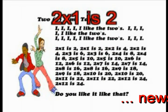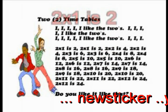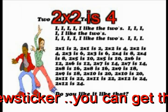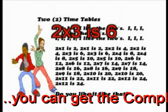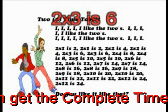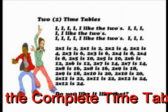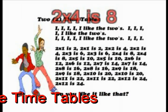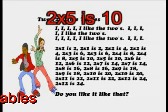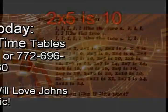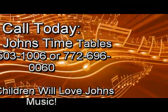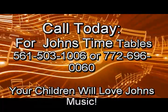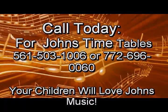Two time one is two. 2x2 is 4, 2x3 is 6. 2x4 is 8. 2x5 is 10. I'm so glad about me.